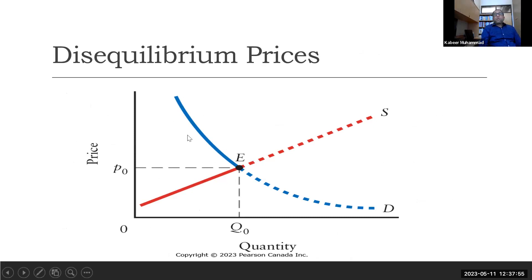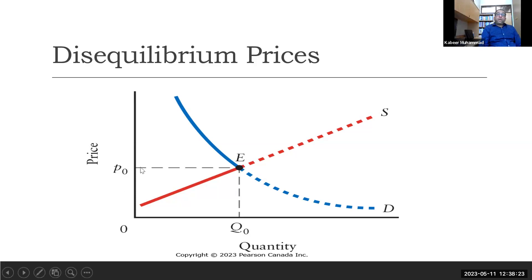If we set a price other than P0 — if it is higher than P0 — then at that higher price, supply is more but demand is less, so demand determines how much quantity is exchanged. If the price is set below P0, quantity supplied is less than quantity demanded, and in that case quantity supplied determines the exchange.